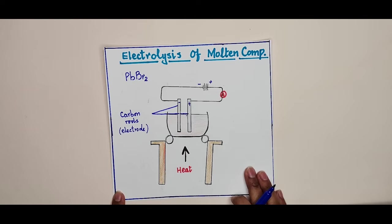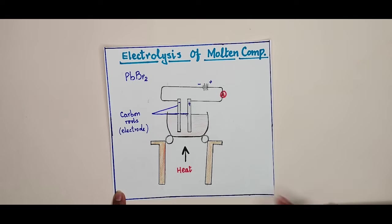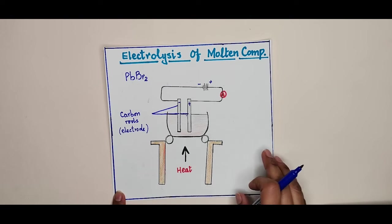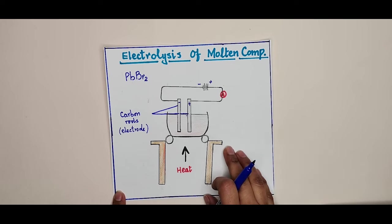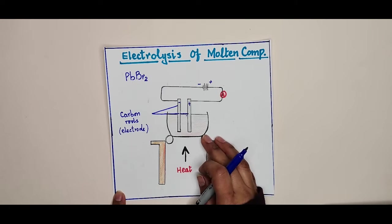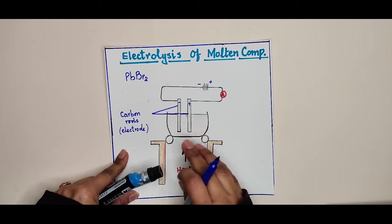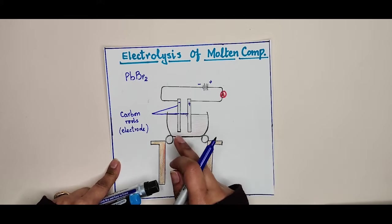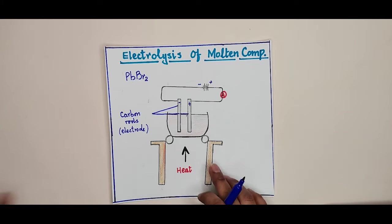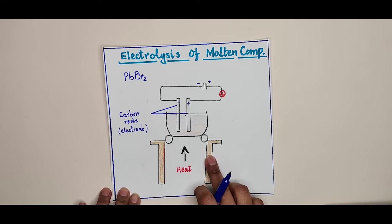We need to heat the lead bromide to melt it, because in the solid state ionic compounds cannot conduct electricity — as already discussed in the introduction to electrolysis. You should review that definition before starting this lecture. You also need to know that carbon rods are made of graphite, which is the only non-metal that can conduct electricity.